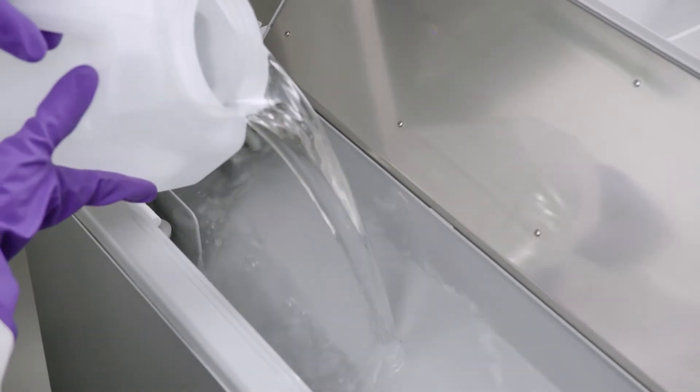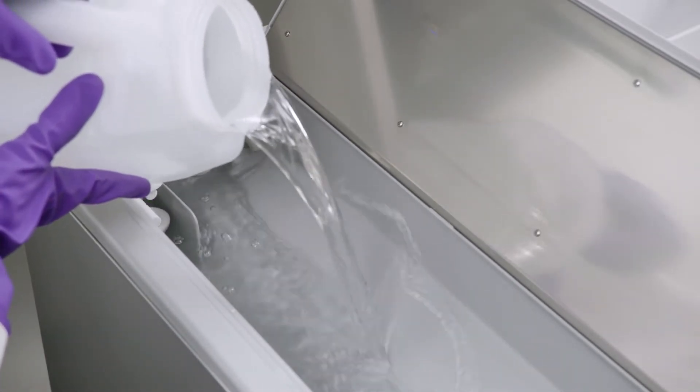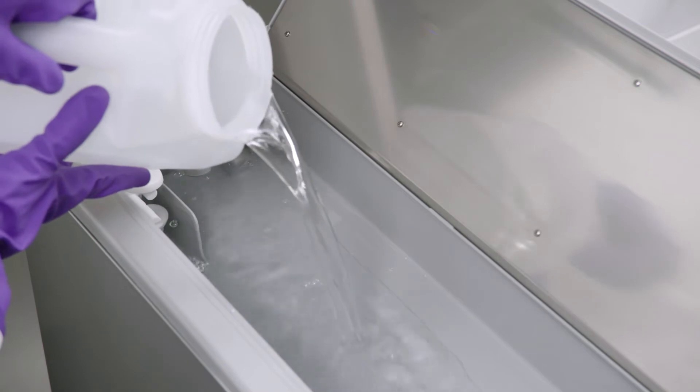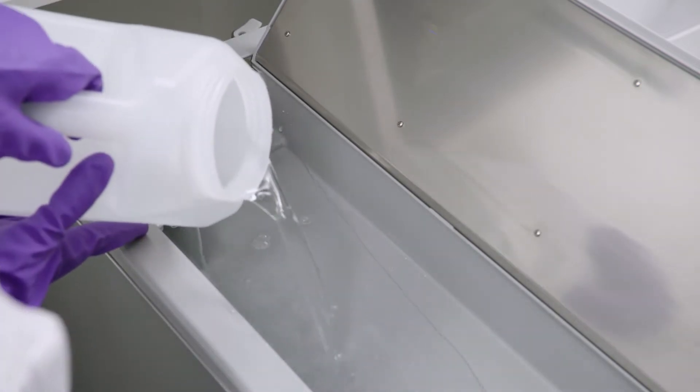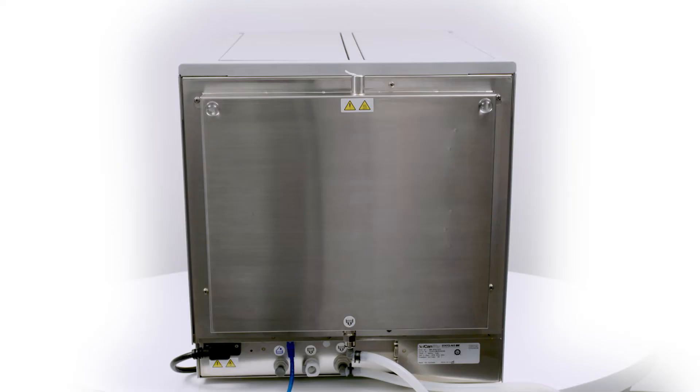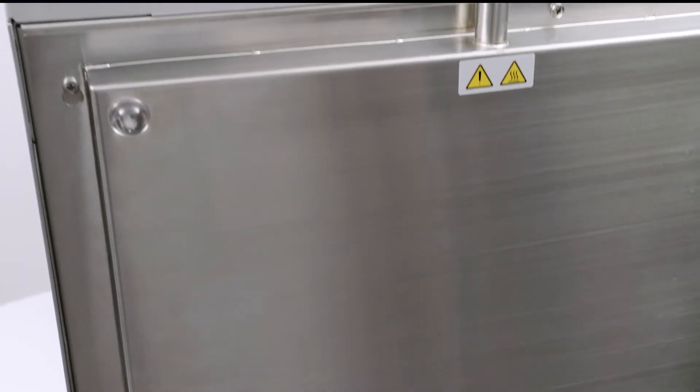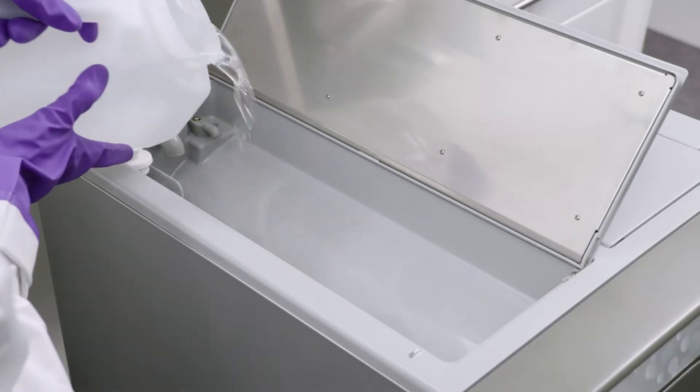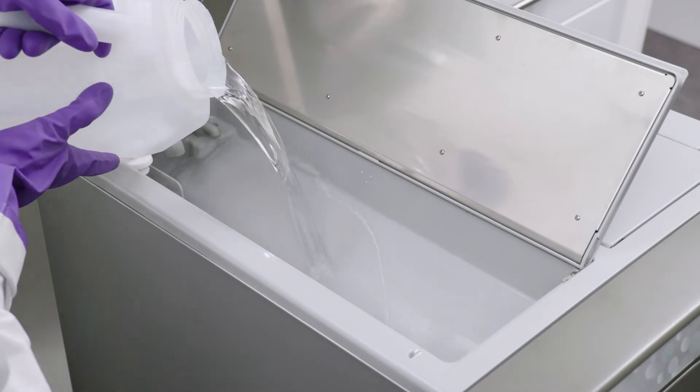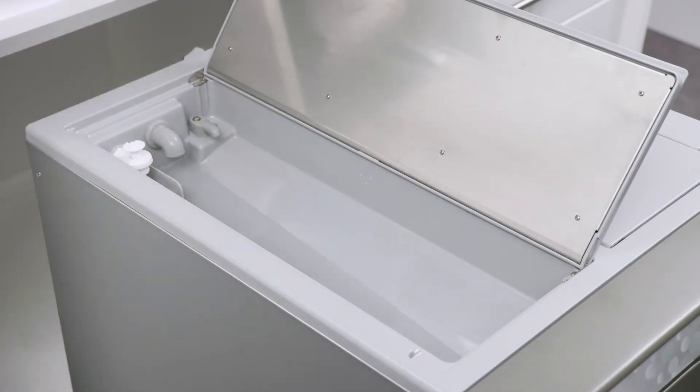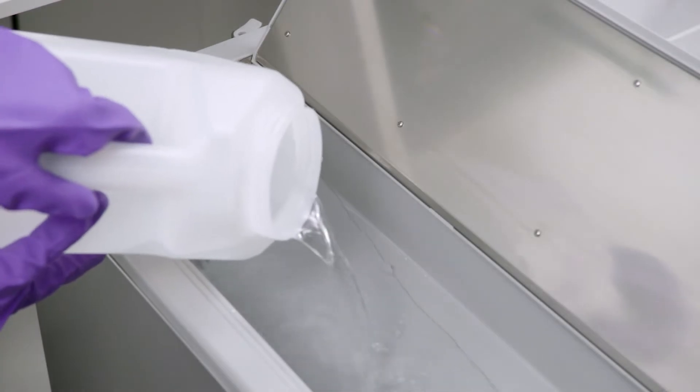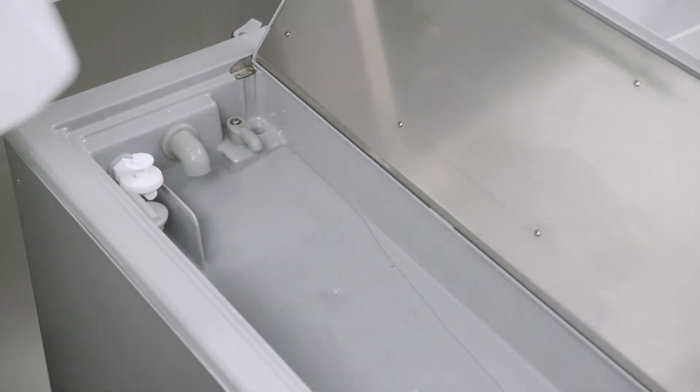To fill the Venturi Reservoir, open the lid, located on the top left of the unit, and fill with steam distilled water to the maximum fill line. The Venturi Reservoir is integrated with the condenser at the back of the unit. Together, these will take a combined 6 liters of distilled water. Fill the Venturi Reservoir to the maximum fill line and wait as the water flows from this reservoir to fill the condenser. Then top up the Venturi Reservoir to the maximum fill line again.